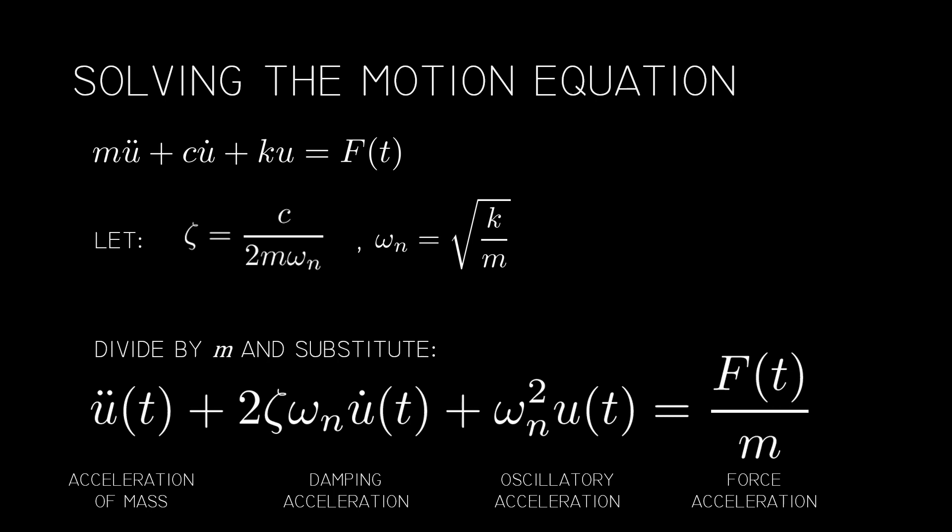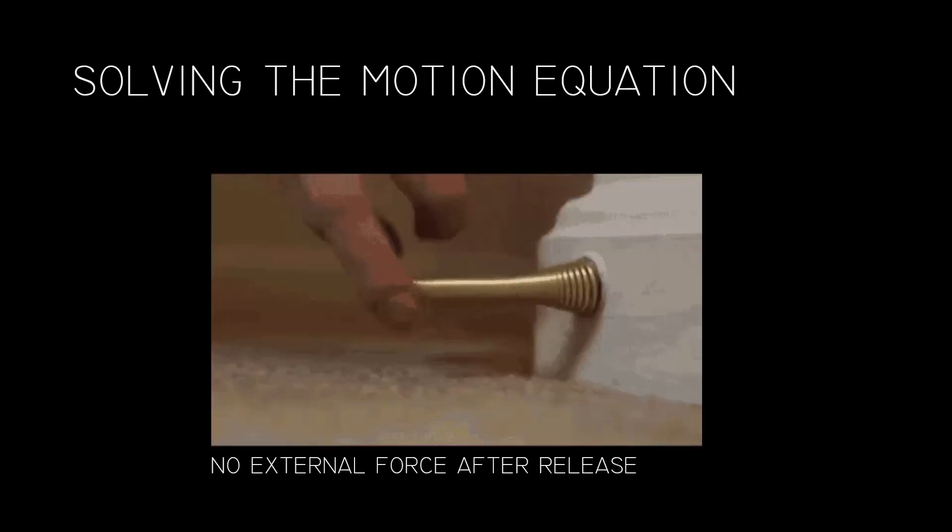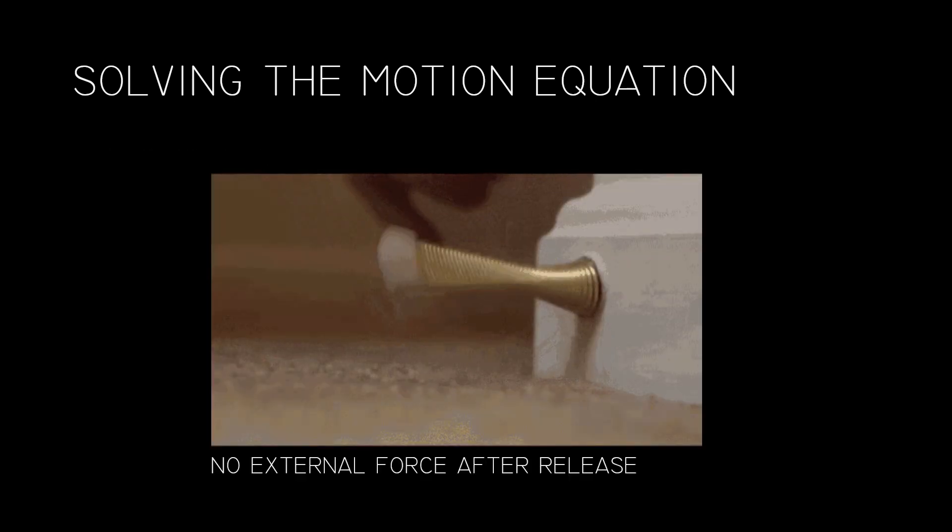The solution falls generally into two categories, forced vibrations and free vibrations. Let's look at free vibrations first. That means the external forces are zero. Trust me, this makes things so much easier. Keep in mind that the system can be moving without external forces since initial conditions can still exist. This could be something like holding the spring extended and releasing at time zero.